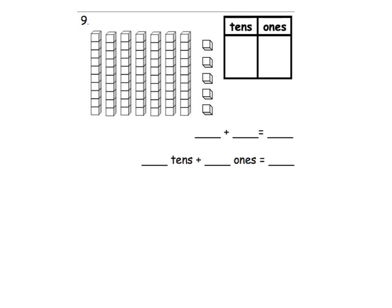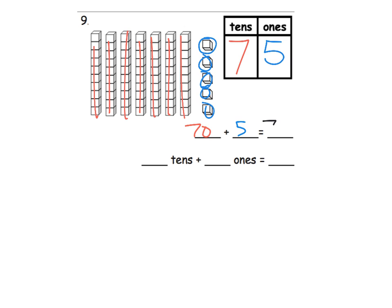This one we're just removing the scaffold of numbers and making it more abstract using base 10 blocks. These are 10s, and your students may need to count them. Hopefully by this point in first grade, our students have had plenty of experience playing with base 10 blocks. Let's count: 1, 2, 3, 4, 5, 6, 7 — so we have 7 groups of 10, meaning 7 tens. And then we have 1, 2, 3, 4, 5 ones. So following that convention, we're going to put 70 plus 5 equals 75. How many 10s? 7 tens. How many 1s? 5 ones, which gives us 75.